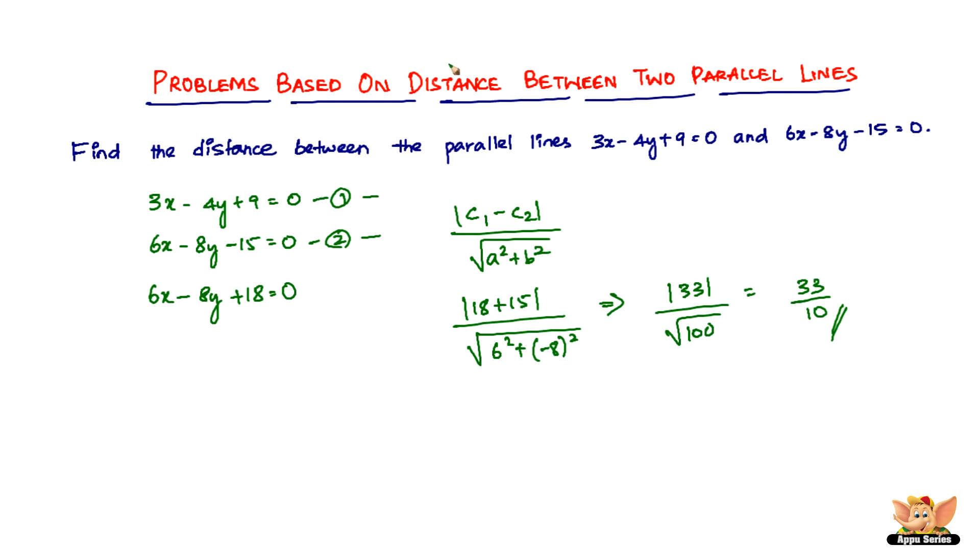A very simple, fundamental, and straightforward problem to solve. You just have to use this expression, which is mod of c1 minus c2 divided by square root of a square plus b square.